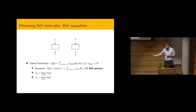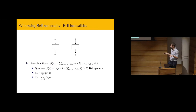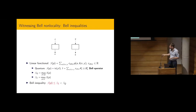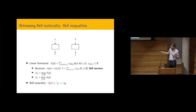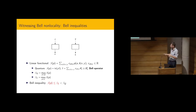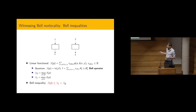We can define the maximal quantum value and maximum classical value by maximizing over the respective sets. A Bell inequality is witnessed by the fact that each local correlation must satisfy a classical bound, but if the maximal quantum value is strictly larger, we can violate this inequality with some quantum measurement. This witnesses that the correlations are non-local.